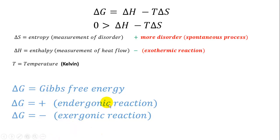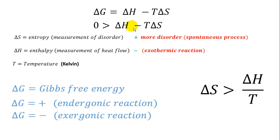We're interested in a reaction that's exergonic in this specific lab, so delta G is negative. That means the whole term delta H minus T delta S must be negative. Doing some math — because we're talking about delta S spontaneity — moving T delta S to the other side of the inequality and solving for delta S, you'll see that for a reaction to be spontaneous, delta S must be greater than delta H over temperature.